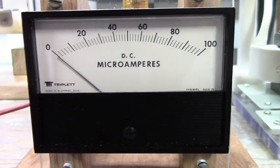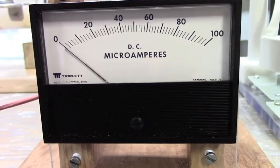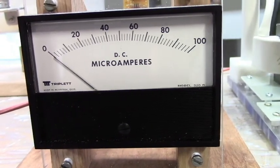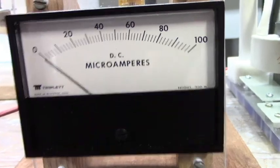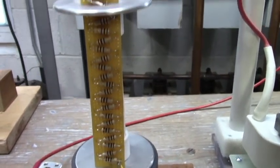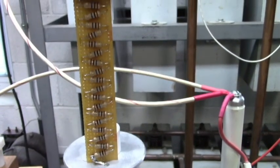So to measure our high voltage I'm using a 100 microamp meter as a voltmeter. So full scale would be 100 kilovolts. And on this are 100, 10 megaohm 1 watt resistors connected in series.